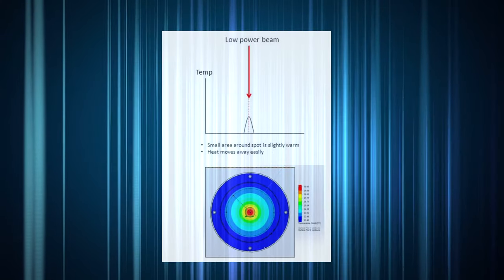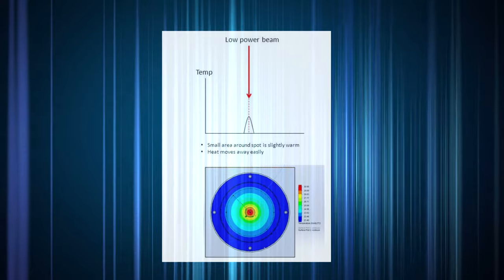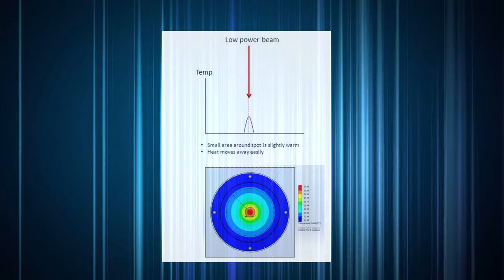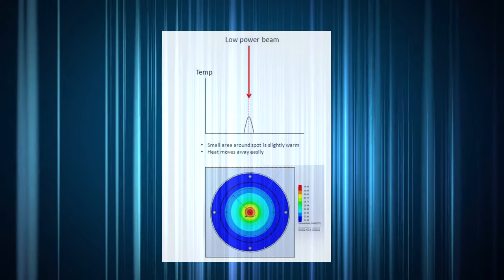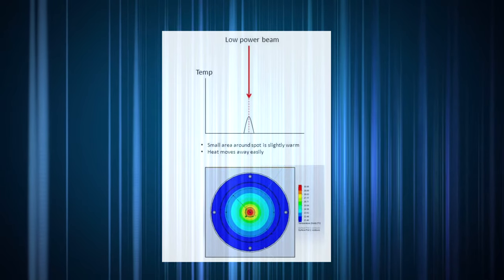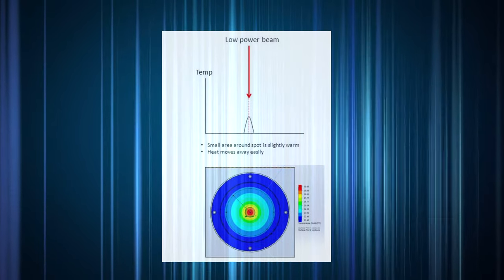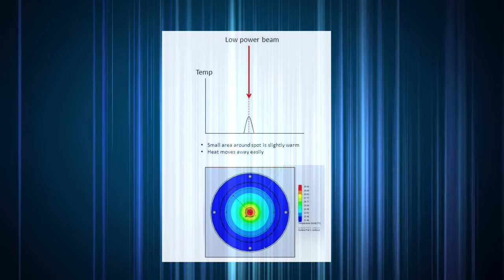At low power, the area around the laser spot is slightly warm. As incoming laser power gets absorbed, the resulting heat has no difficulty moving out of the way. Even high power densities will not easily heat the spot up to the point of damage.